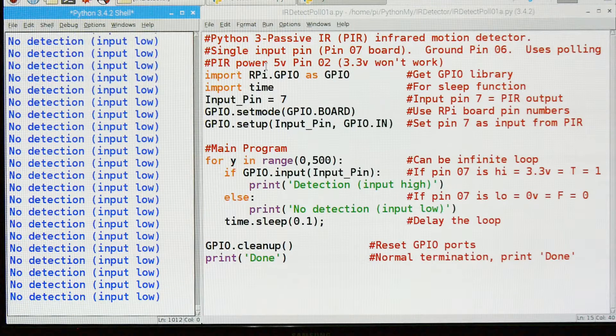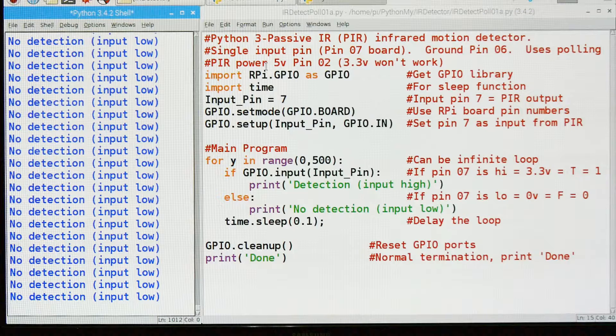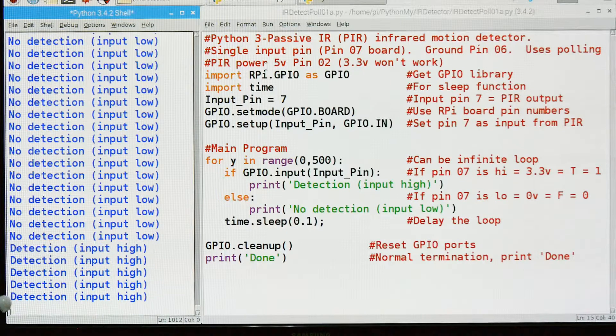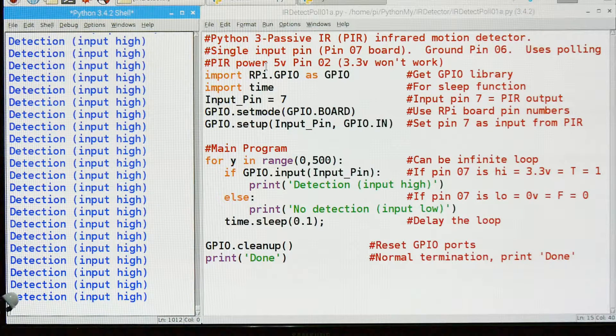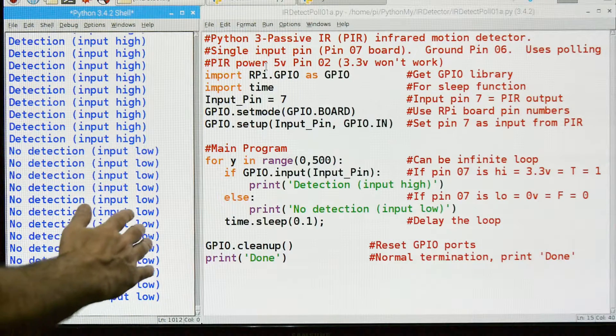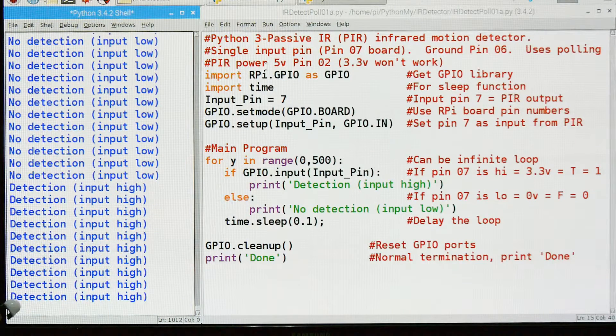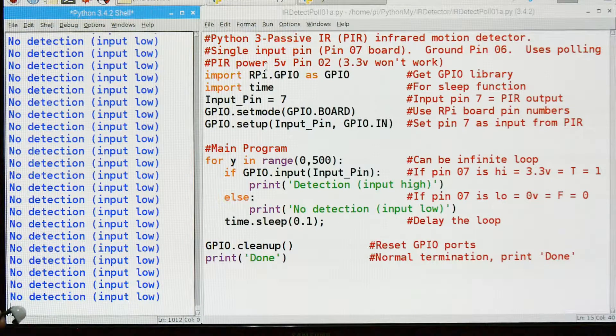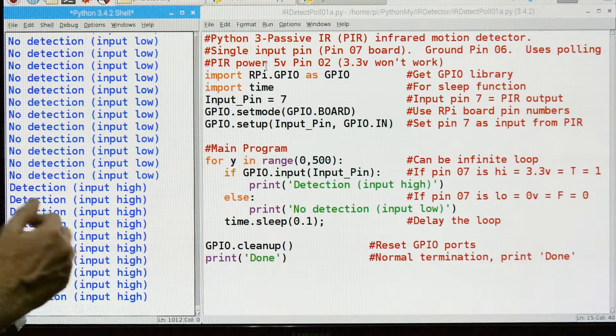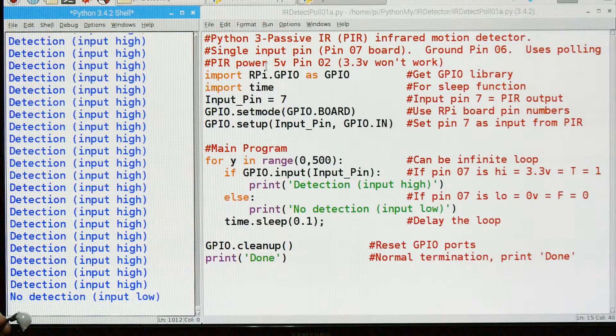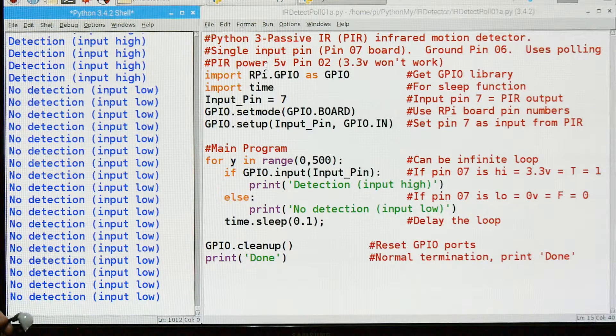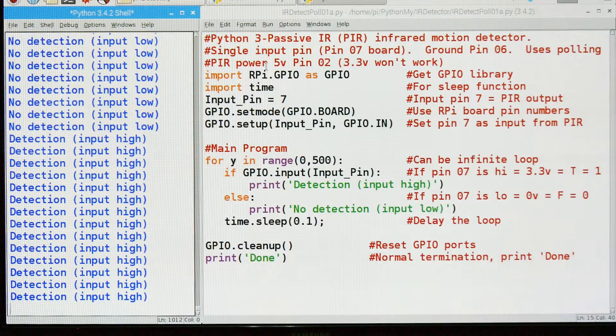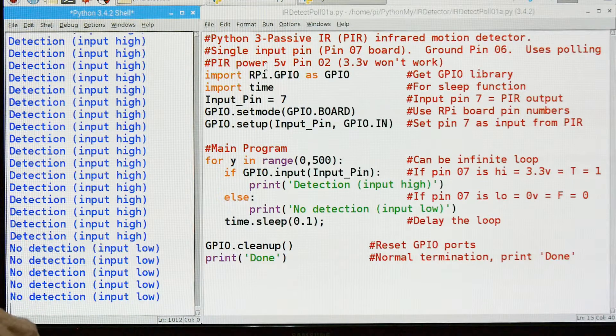This is our software. Let's take a look over here. I've got it running. We'll let it calm down here for a second. When something warm passes in front of it, the input goes high. And it goes low after a while. And then it detects me again. And it goes high and then no detection goes low. So let's take a look at the software that's making this happen.